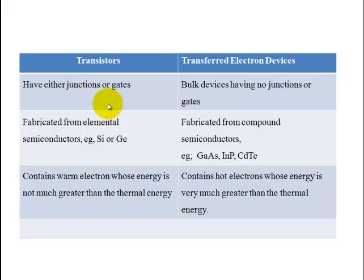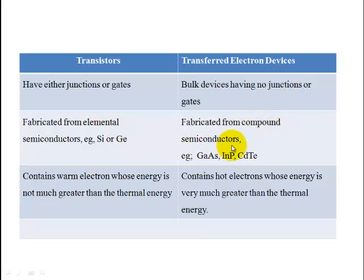But for transferred electron devices, the device is a bulk device — it has no junction or gate, it is a bulk semiconductor device. In transistors, we use elemental semiconductors — either silicon or germanium. But in TEDs, we use compound semiconductors: gallium arsenide, indium phosphide, cadmium telluride, and other compounds.